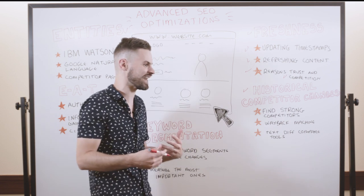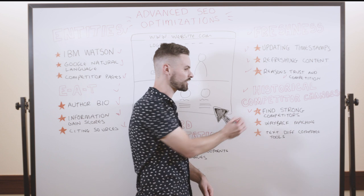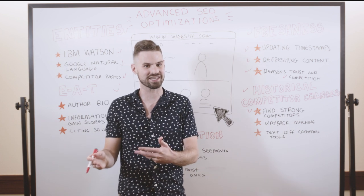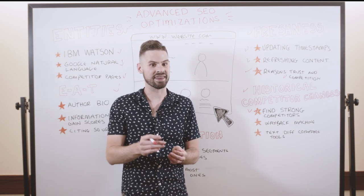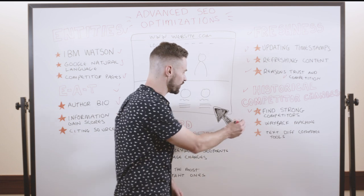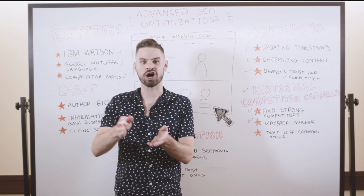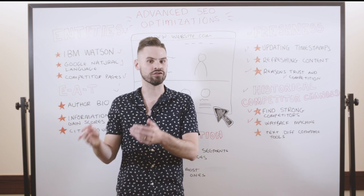So you can do this type of analysis for really competitive queries. What I like to do is find a strong competitor that's actually improved in the rankings in recent years, and then take that page and actually run it back to the Wayback Machine and see which on-page changes they've made over time.